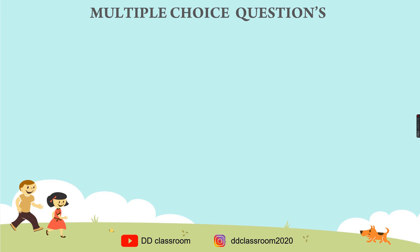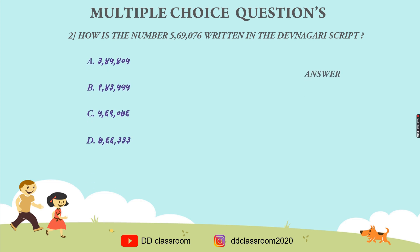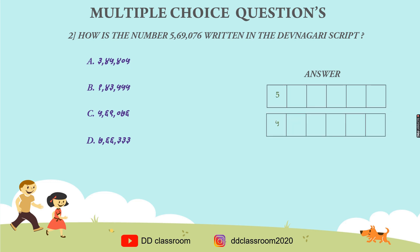Let's move to the next question. Question 2: How is the number 569076 written in the Devanagri script? You have four options. Let's try in Devanagri script. The answer is 5, 6, 9, 0, 7, 6 — that is 569076. The correct answer in the options is option C.